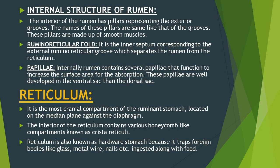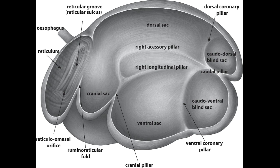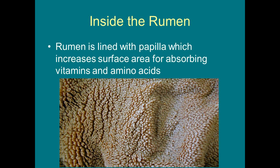The internal structure of the rumen: the external grooves are identified internally as pillars. The names of these pillars correspond to their respective grooves — right longitudinal pillar, left longitudinal pillar, right accessory pillar, left accessory pillar, cranial pillar, caudal pillar, rumino-reticular fold, and coronary pillars. Internally the rumen contains several papillae, which increase the surface area for absorption. The papillae in the ventral sac are better developed than those in the dorsal sac. The other name for rumen is paunch.